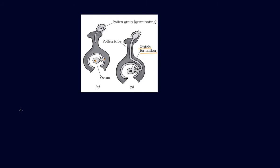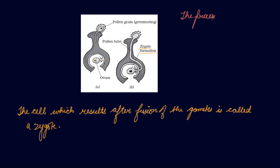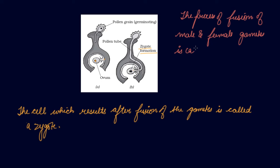The cell which results after the fusion of the gametes is called a zygote. The cell is formed after the fusion of male and female gametes — that is, your pollen grains and ovules. The process of fusion of male and female gametes to form the zygote is called fertilization.